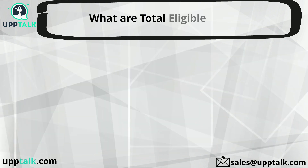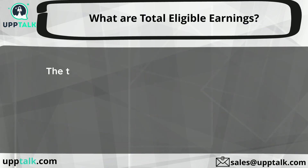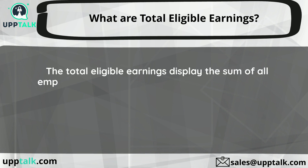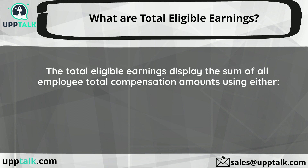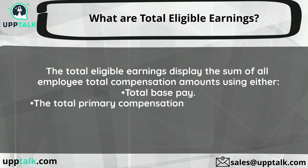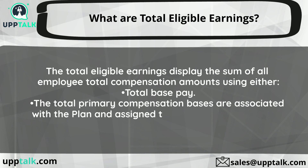What are total eligible earnings? The total eligible earnings display the sum of all employee total compensation amounts using total base pay. The total primary compensation bases are associated with the plan and assigned to the selected merit plans.